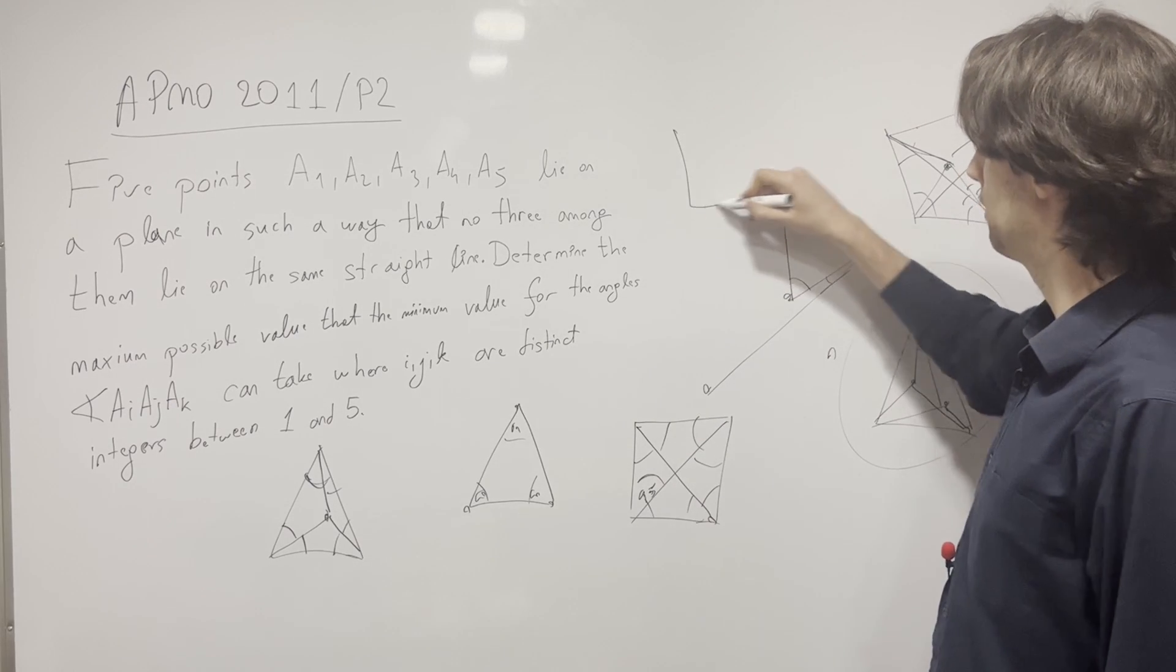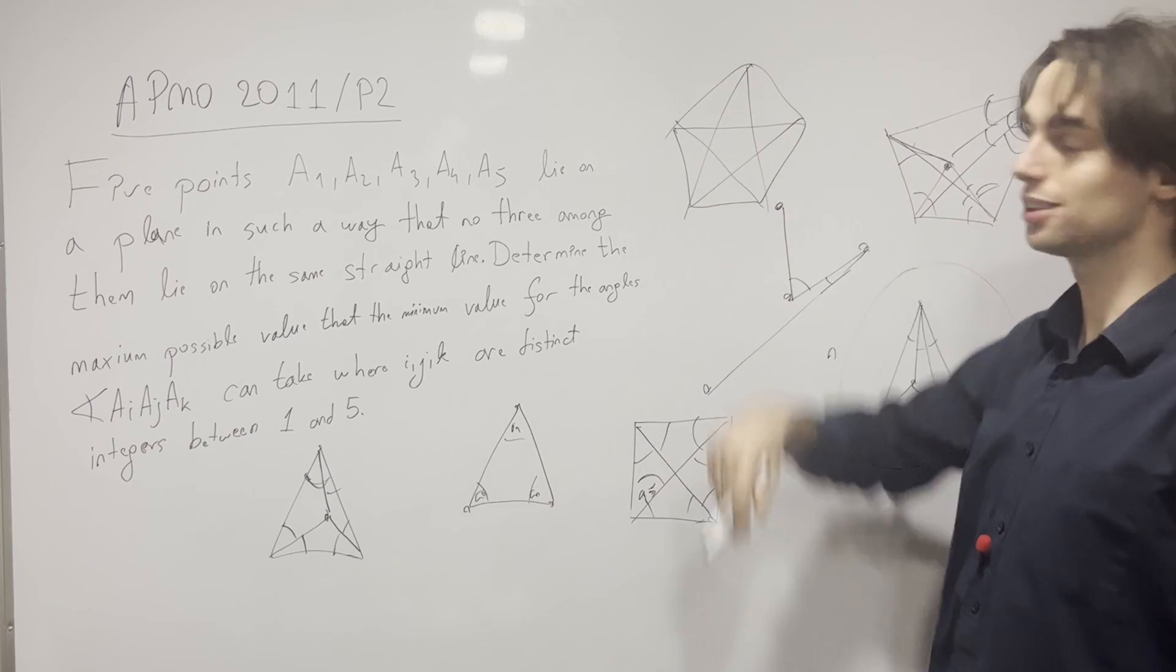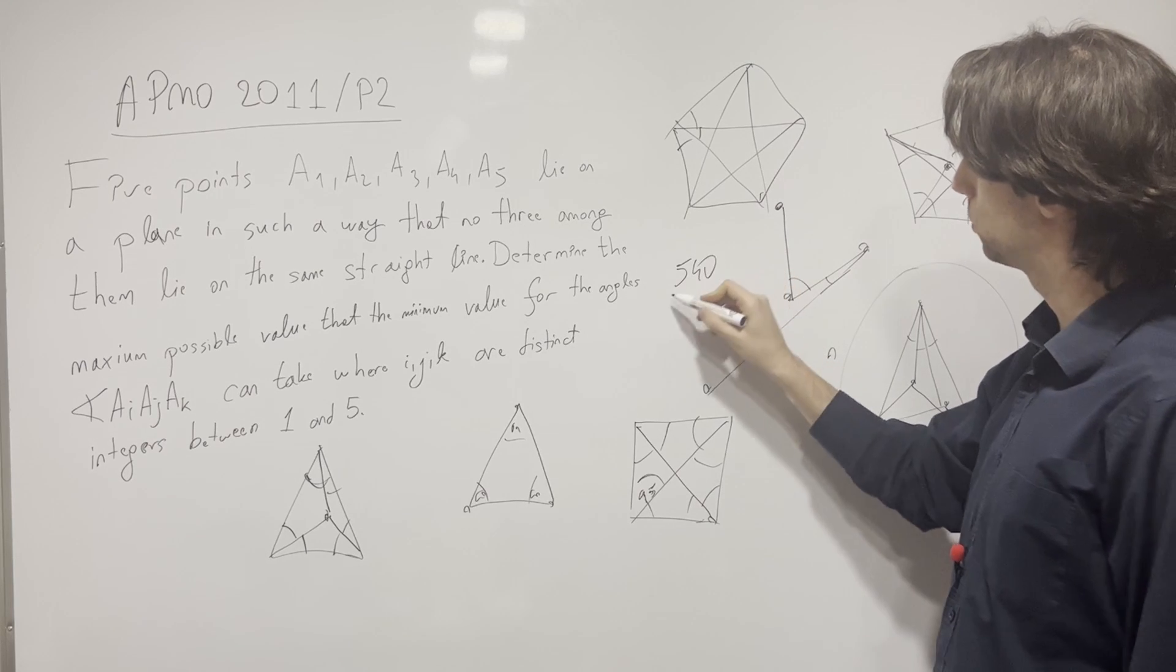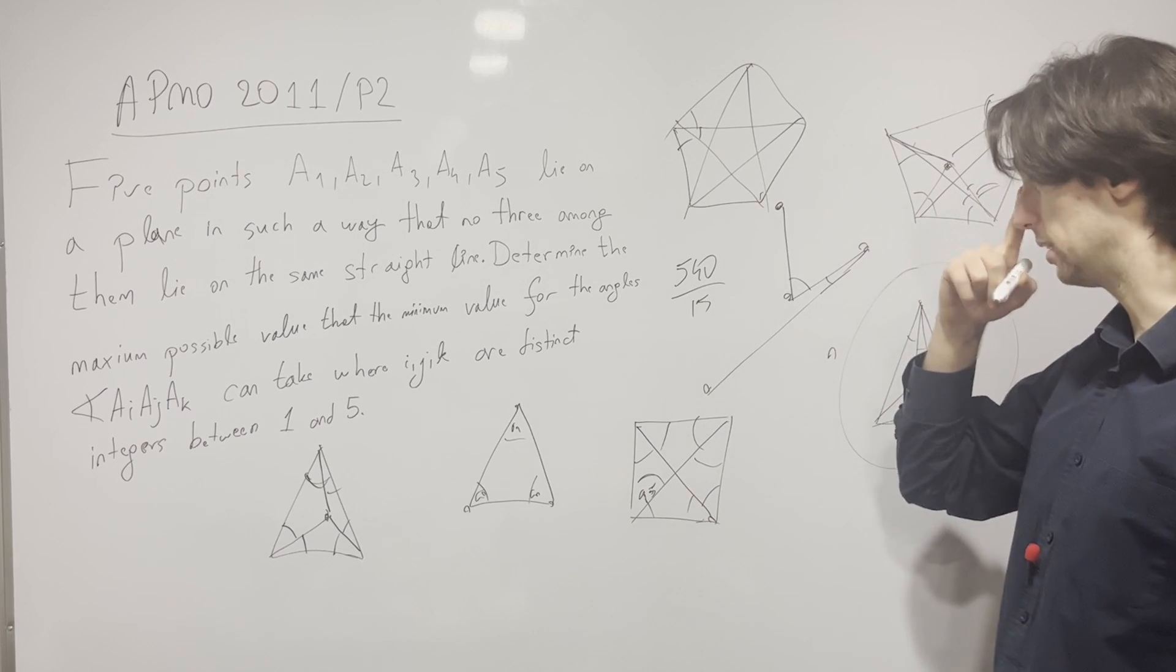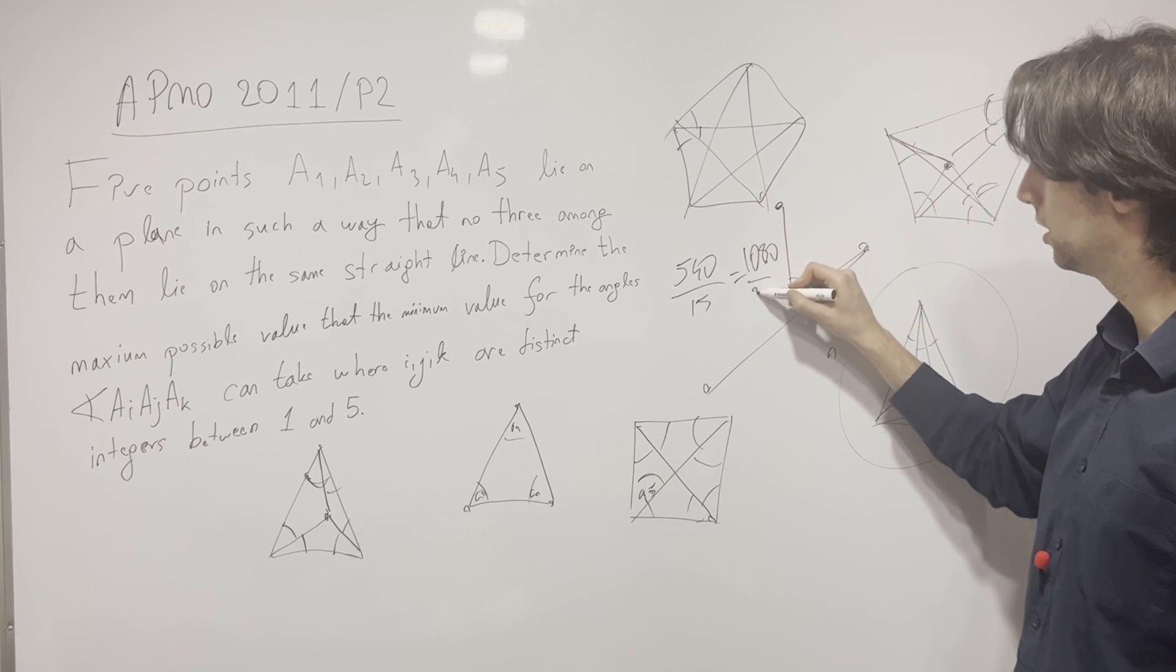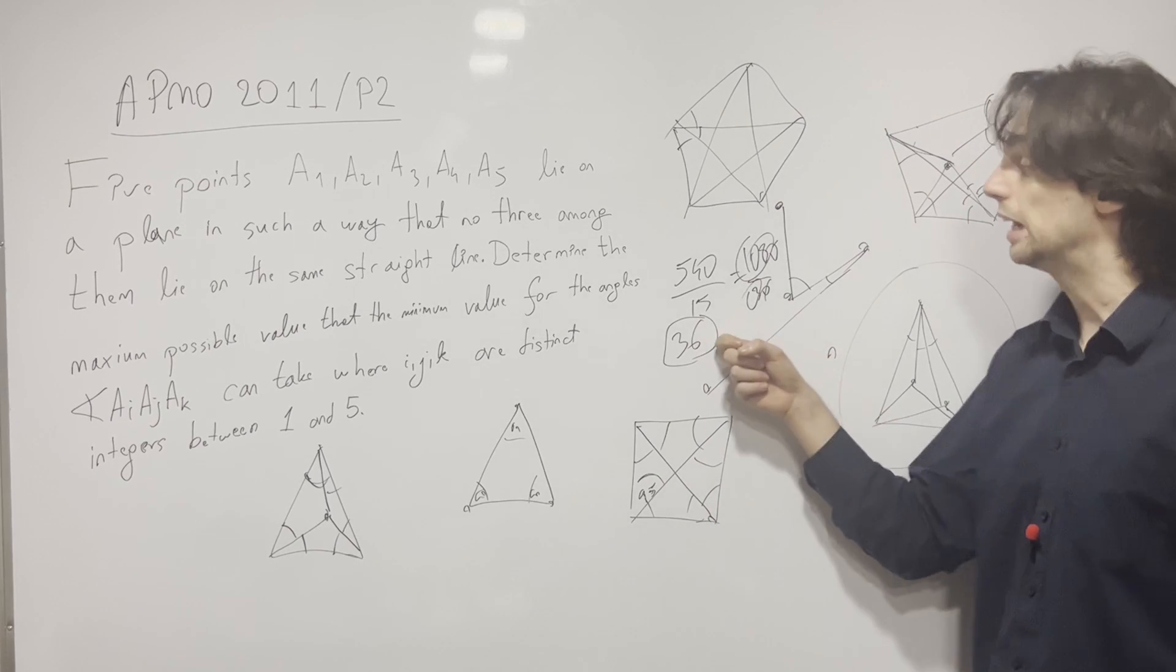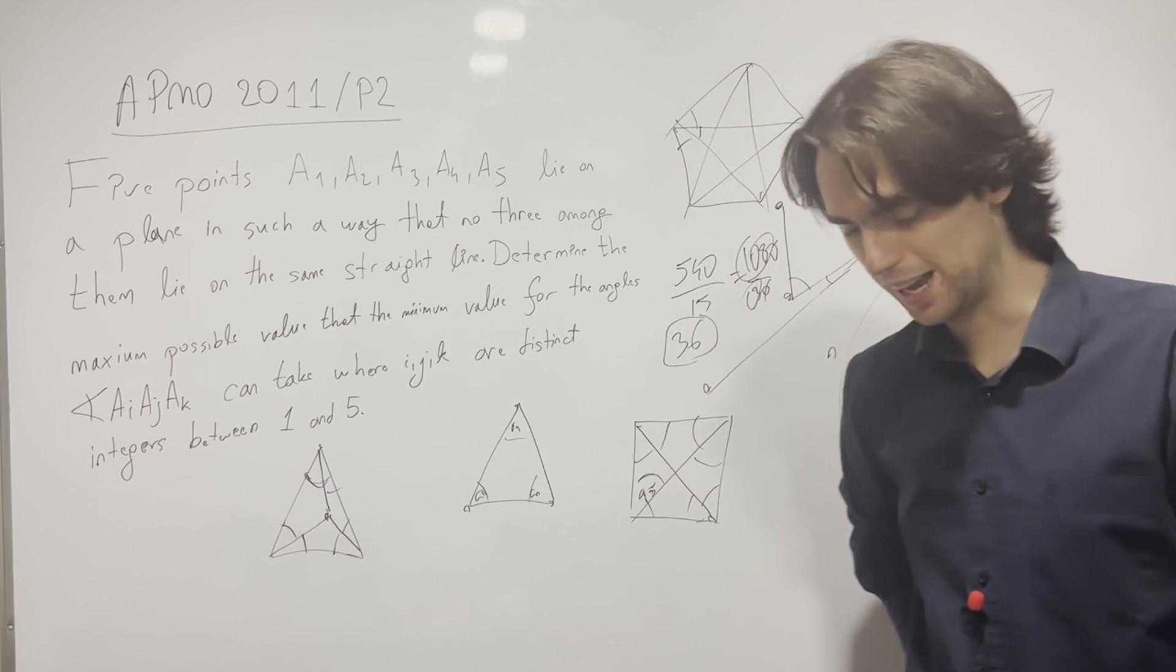And finally, I can have a situation where I have 5 points like this. And then if I draw the star here, I have 1, 2, 3, times 5. I have 15 angles. They sum up to 540. So one of the angles is at most 540 over 15. Which is equal to, if I multiply both sides by 2, 1080 over 30. Cancel the zeros. 108 over 3 is equal to 36. And I'll get 36 if this is a regular pentagon, because I get all these angles are equal in a regular pentagon.